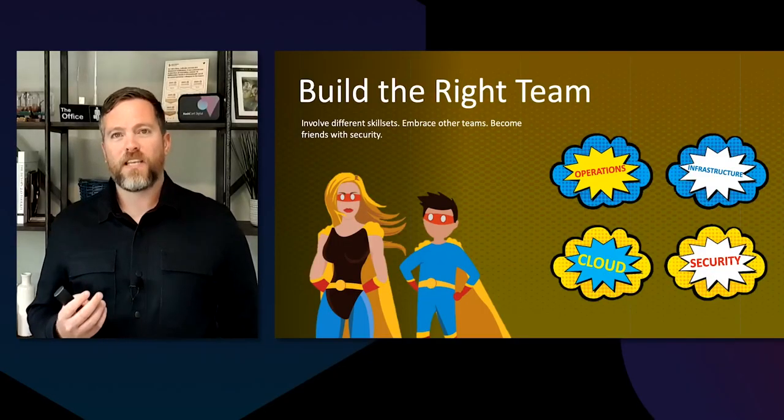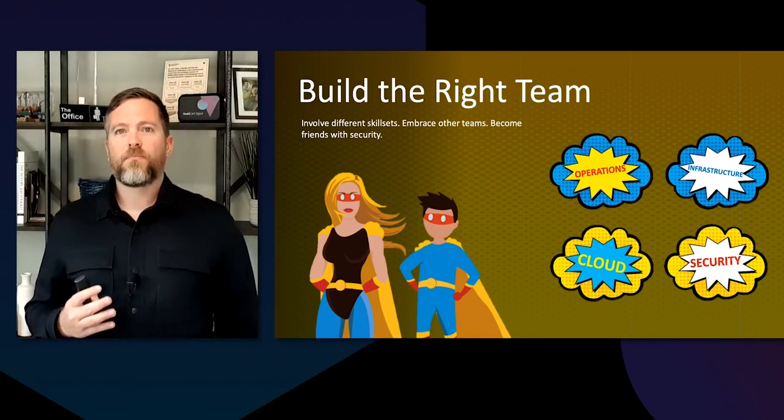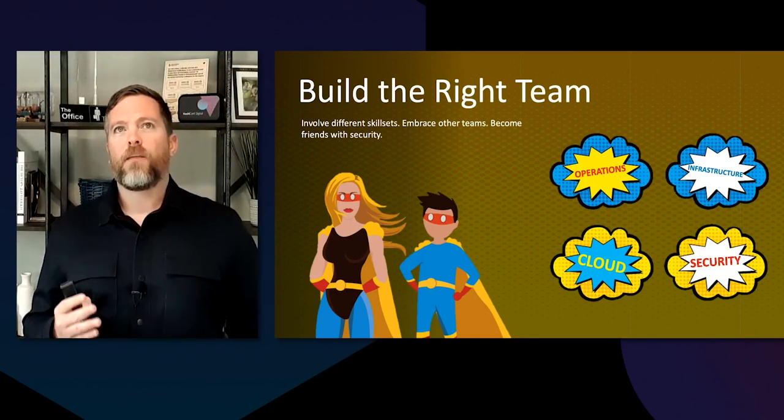Obviously involve the cloud team if you're running on a public cloud, and then the security team. A lot of times I see the automation team and the cloud team are the ones trying to bring Vault to the organization, and oftentimes security is not involved — I highly discourage that. Security is going to want to use Vault to improve their security posture across the organization, and they're also going to be the ones that help champion Vault to the organization. Your project is going to help different development teams, IT, even HR — whoever else wants to use Vault.